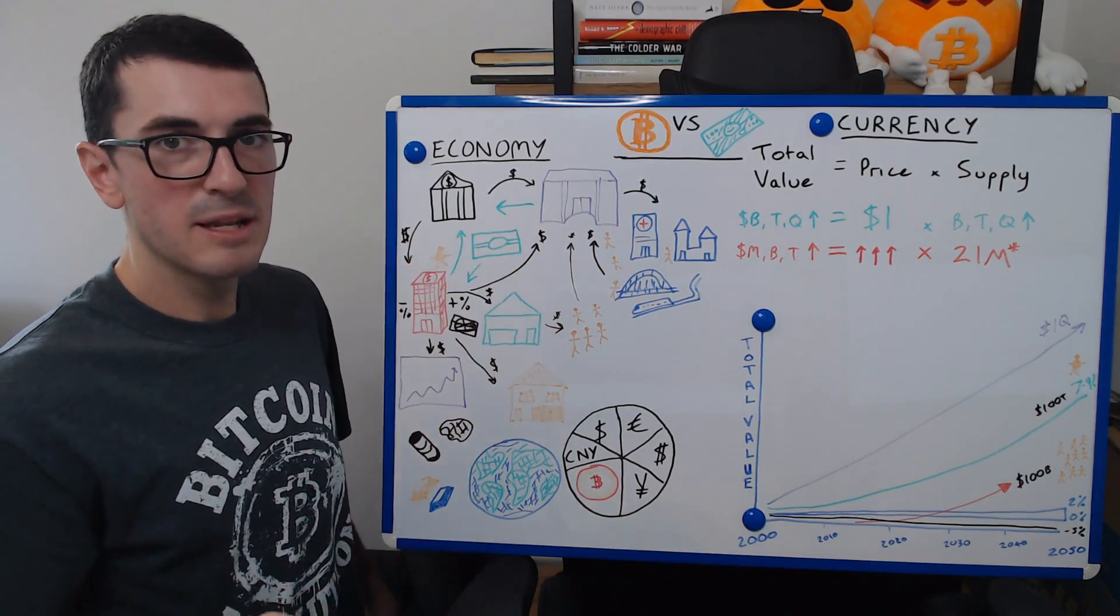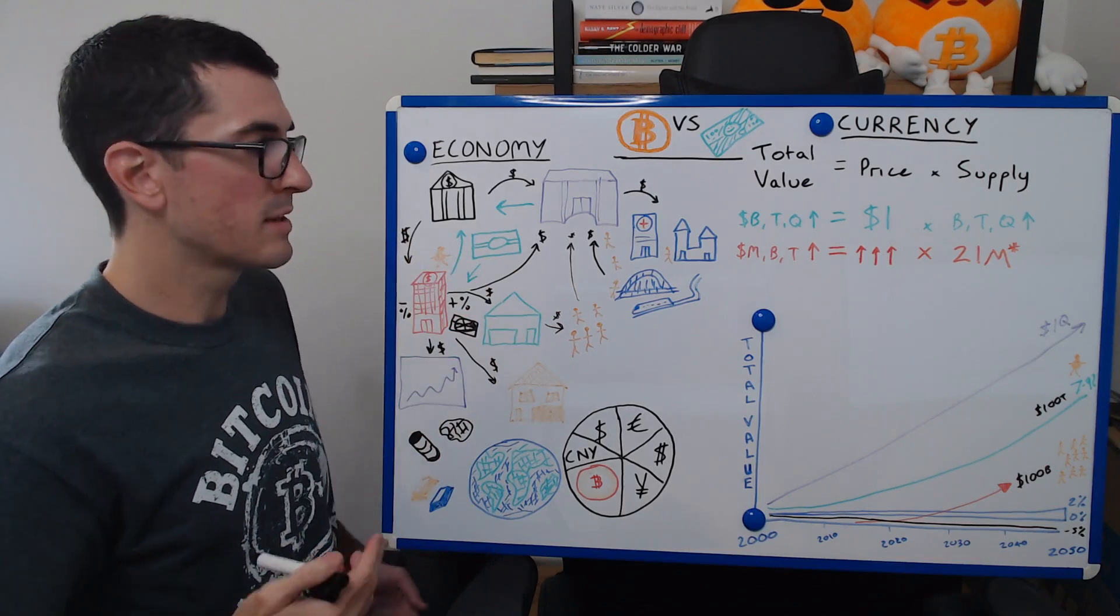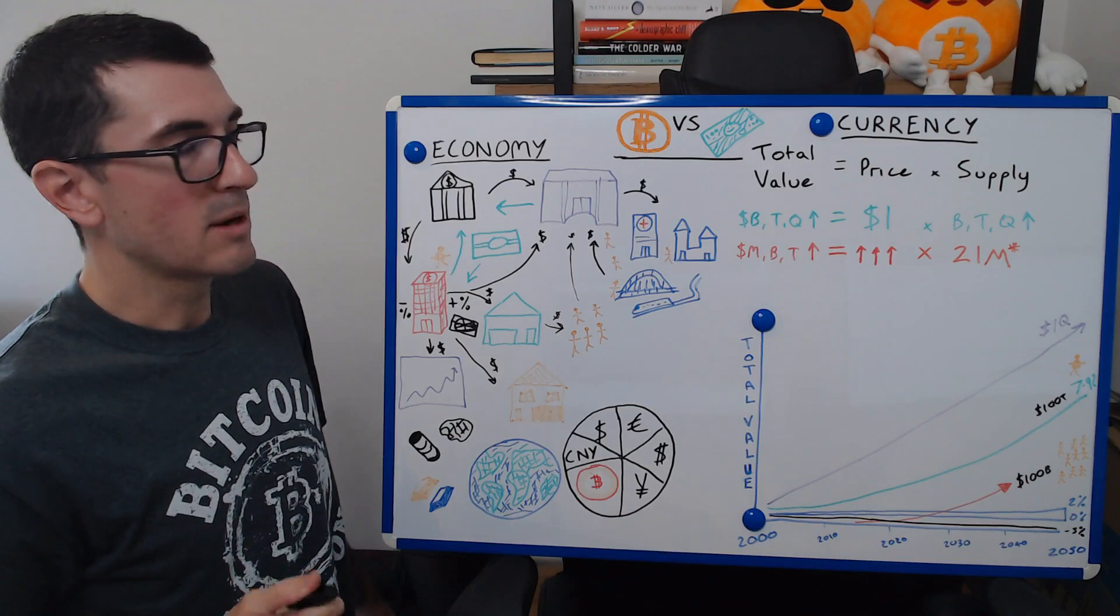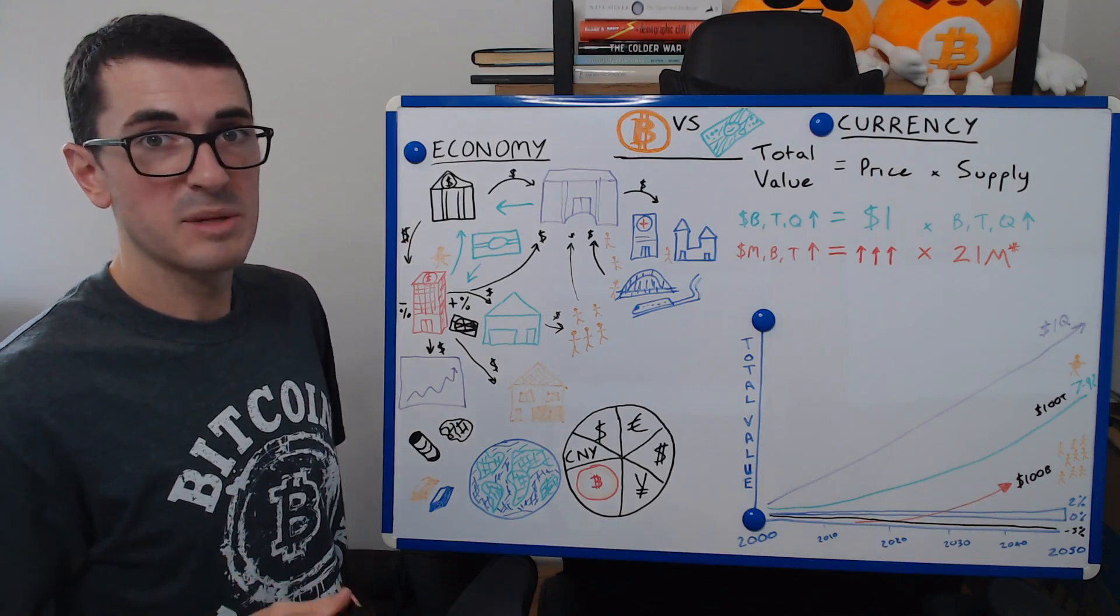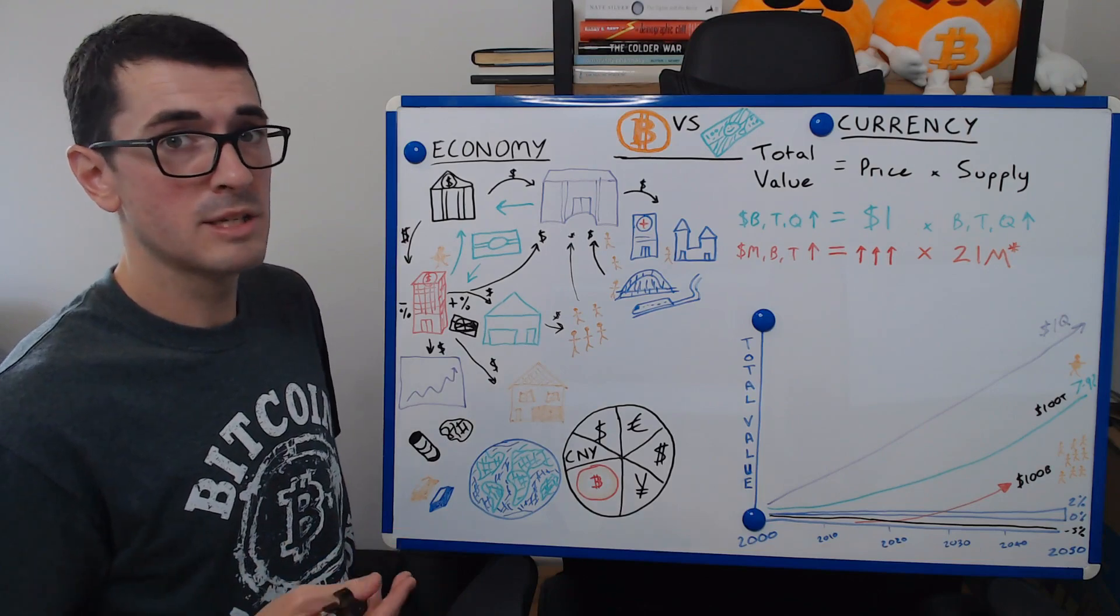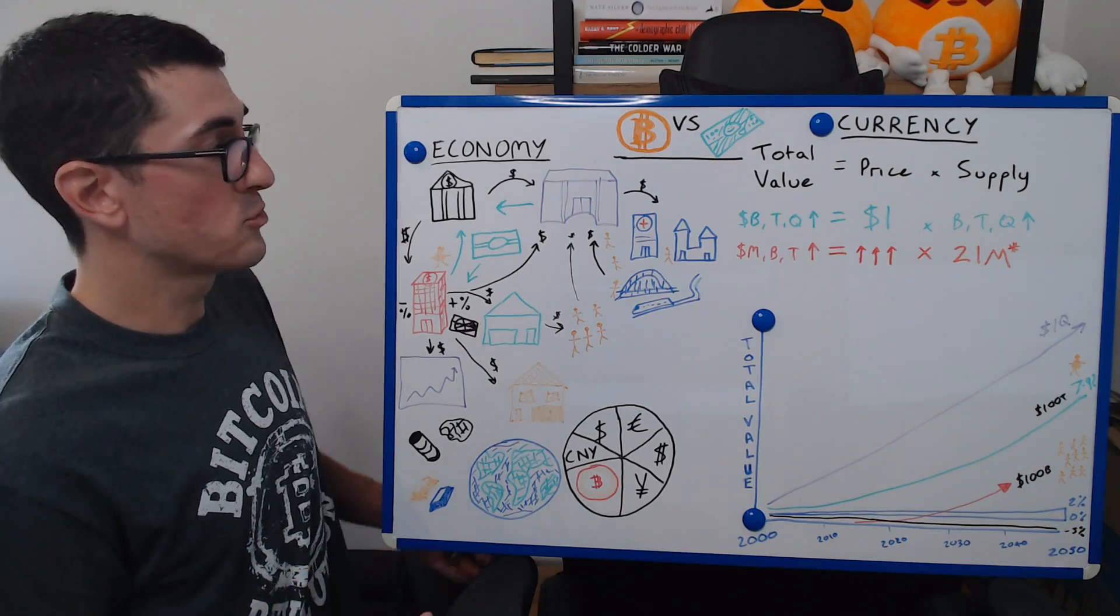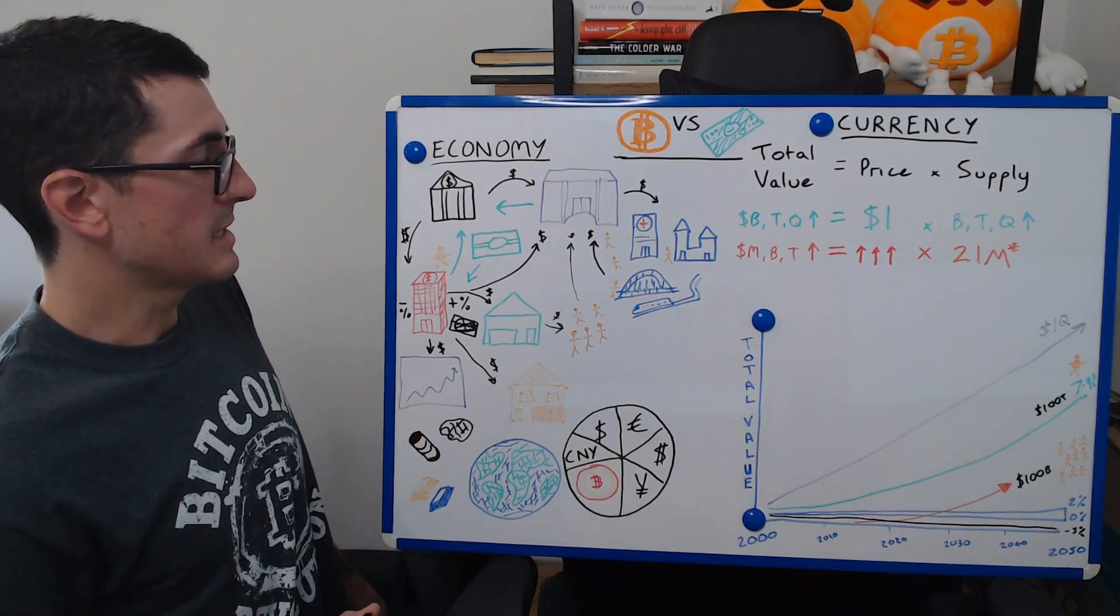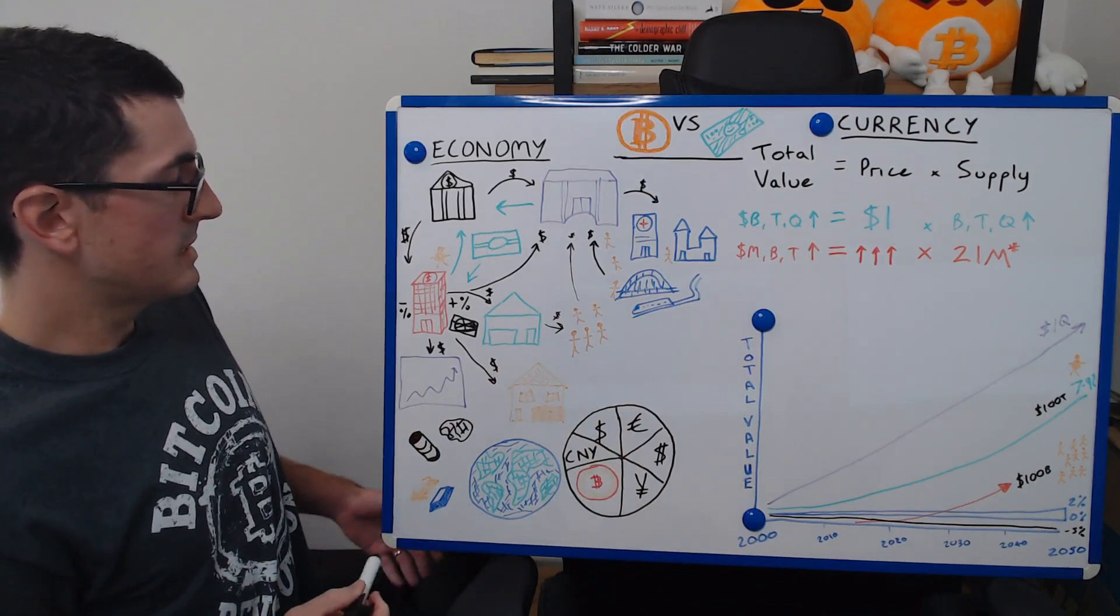Now, if they spend more than the amount of bonds they've sold or the amount of tax they take in and the revenues they get, they run deficits. And this is where a lot of governments now are running massive deficits. The US are running a trillion dollar deficit a year, and they've already got $23 trillion in debt. And we're going to get to why that's really important at the end here.